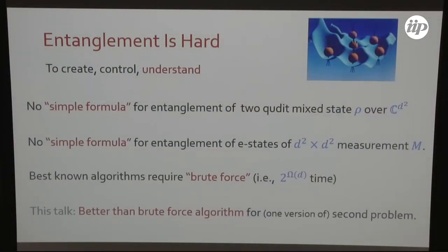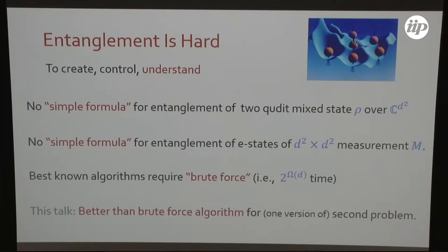This talk is about a better-than-brute-force algorithm for one version of the second problem: figuring out if a measurement is an entanglement witness. This is a theoretician-type improvement — it will be two to the square-root-D. It's not a new algorithm; it's new analysis. The algorithm is the DPS algorithm that everyone knows. Our analysis would show you can run this algorithm on a system of roughly three-quarters of a particle — so theoretically better than brute force, not necessarily practical.